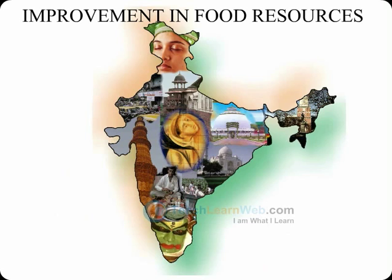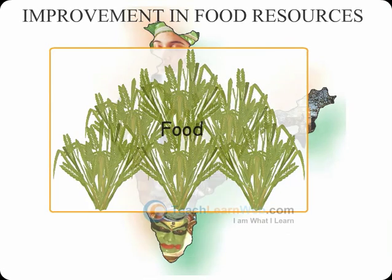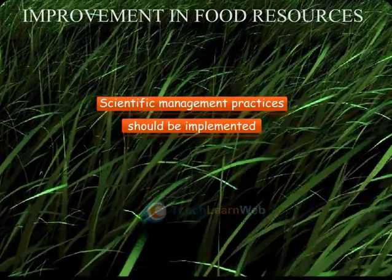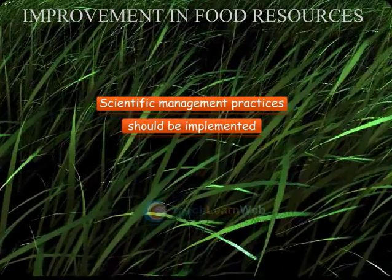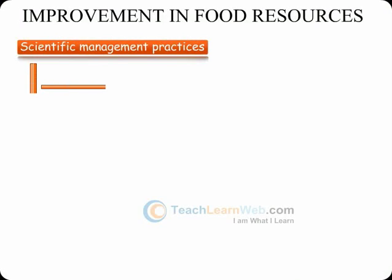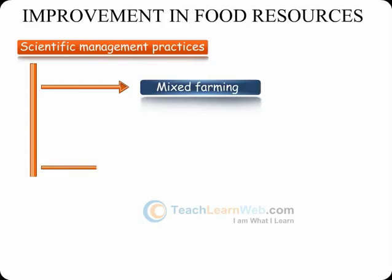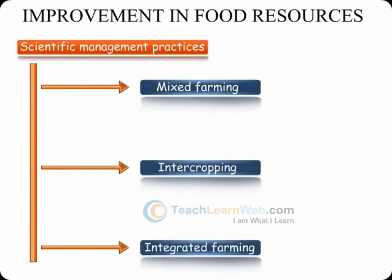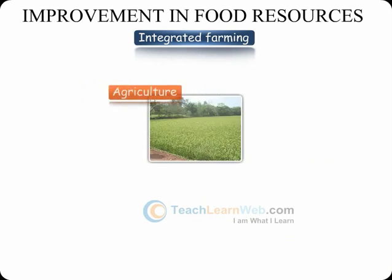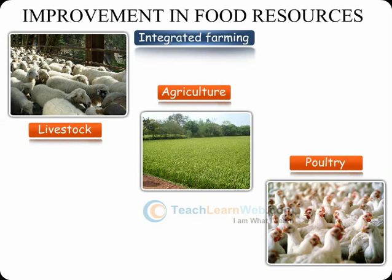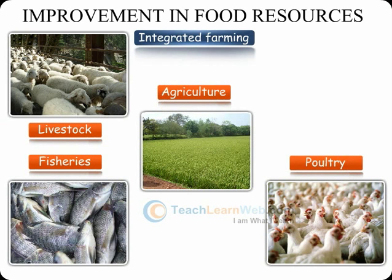Increasing population in India is causing the demand for food. Scientific management practices should be implemented to increase the yield of food. These practices include mixed farming, intercropping and integrated farming practices where agriculture is combined with livestock, poultry, fisheries and beekeeping.